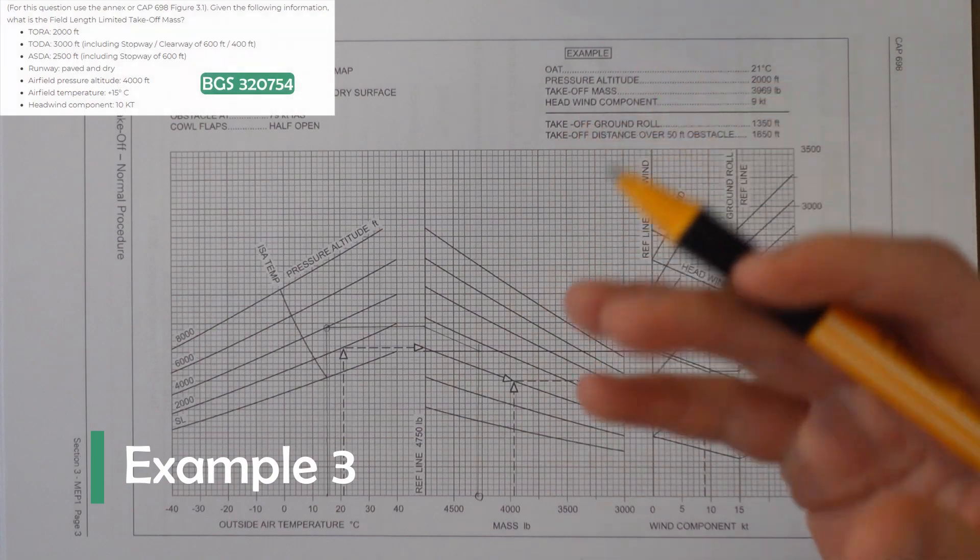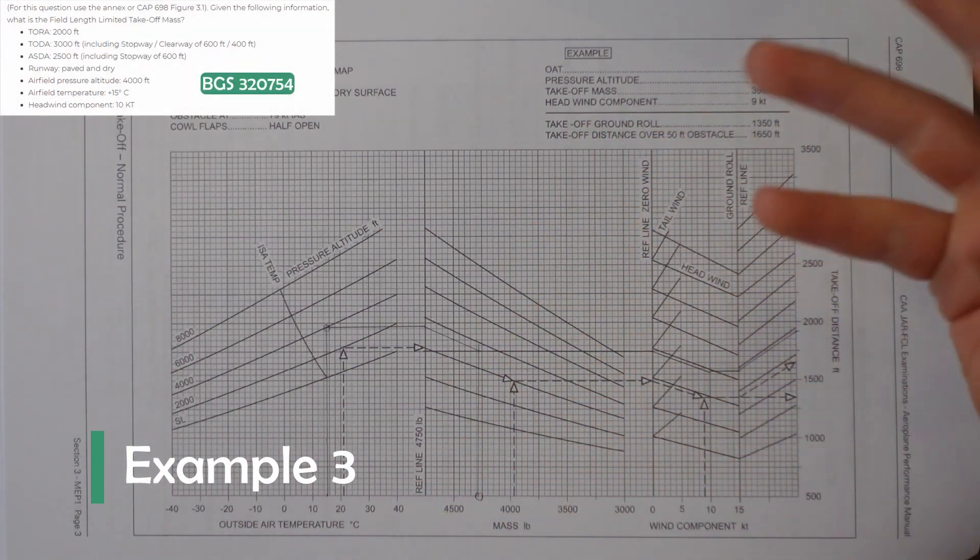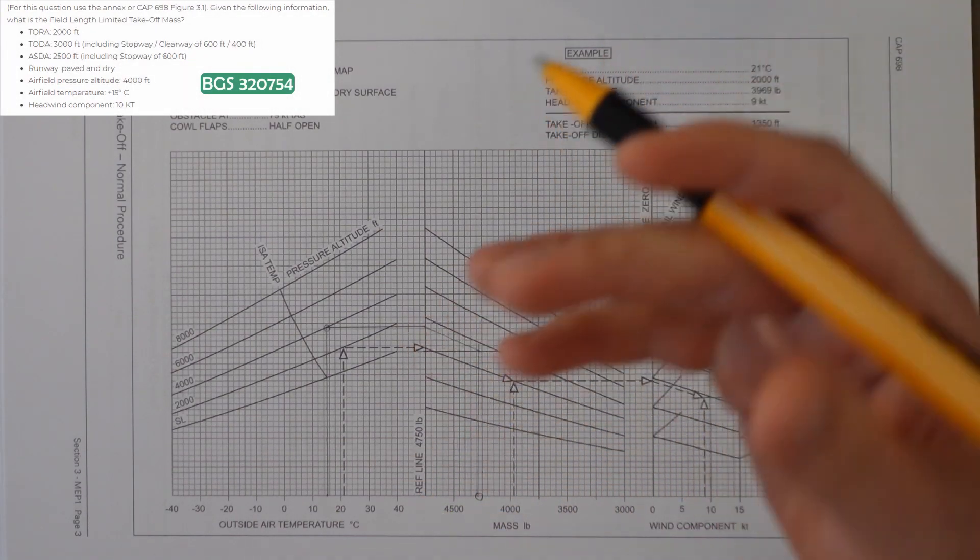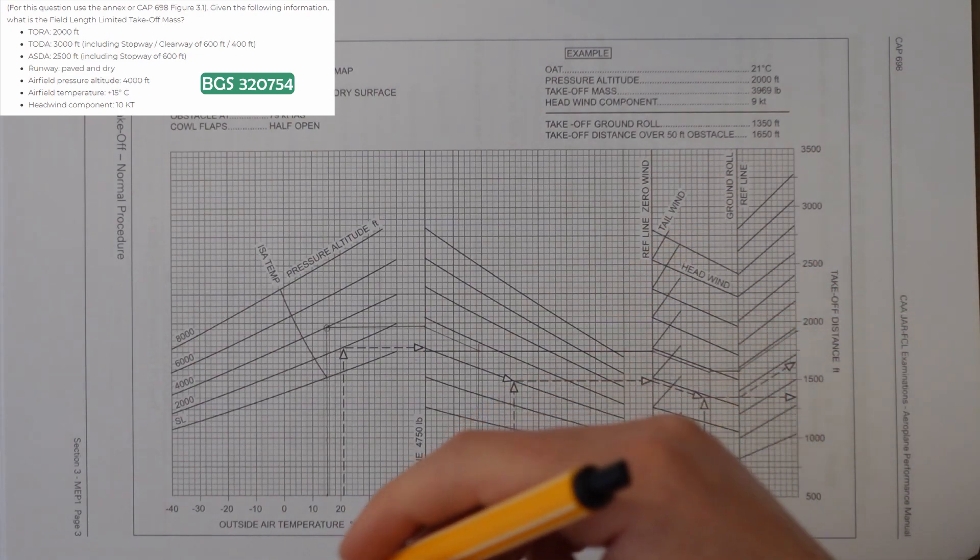In this next example, we basically have to do the same thing as we just did. Think about all the relevant factors, then also use it in the graph to find out the field length limiting mass.